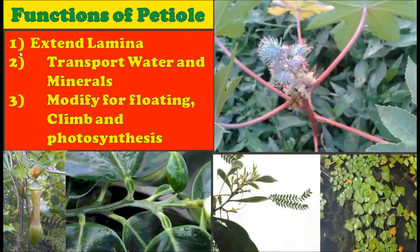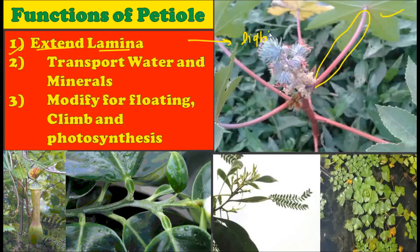Now let us consider the functions of the petiole. The very first is that it extends the lamina. Due to the petiole, it extends the lamina far away from the plant. When the petiole is long enough to take the lamina away from the plant body, it will reach towards the light and will not remain under the shade of other leaves. So the very basic and important function is that it extends the lamina away from the main plant body, which helps the plant get more sunlight and perform photosynthesis maximally.